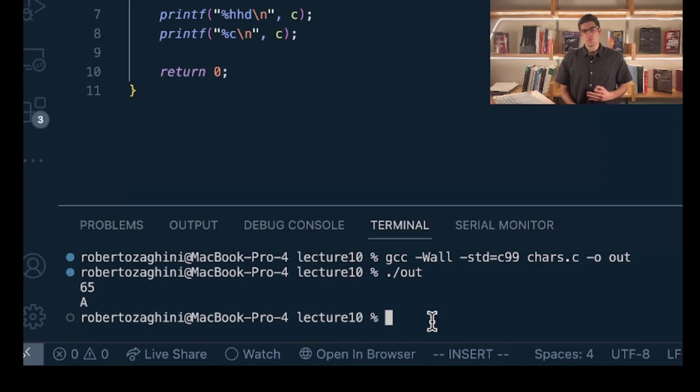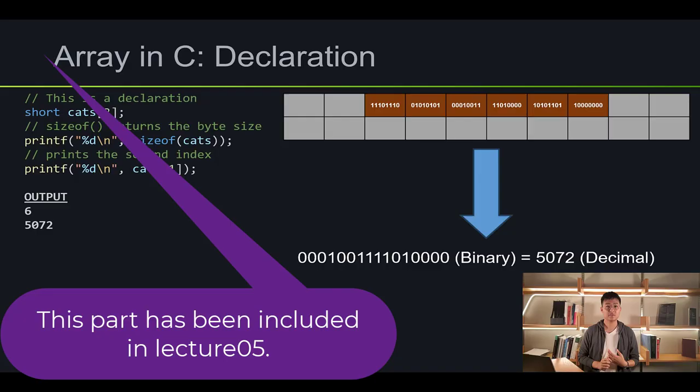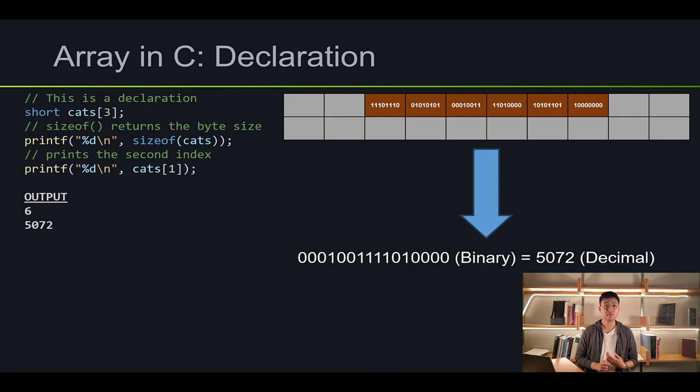Now let's dive more into arrays. The very first thing I want to introduce you to is declaration. Declaration means I want to reserve some spot in a memory grid. In the code, I reserved six blocks for our variable called cats. The reason why I took six is because short data type contains two bytes, and we initially said we want three, so three times two equals six bytes.